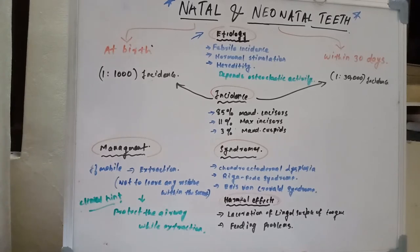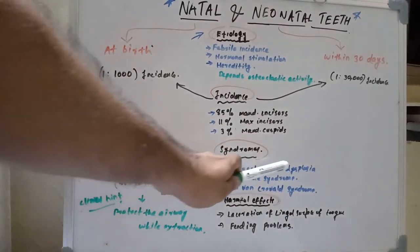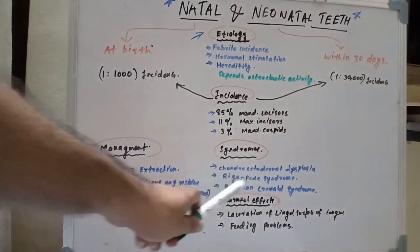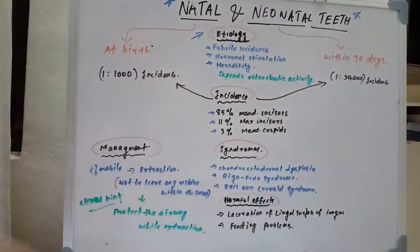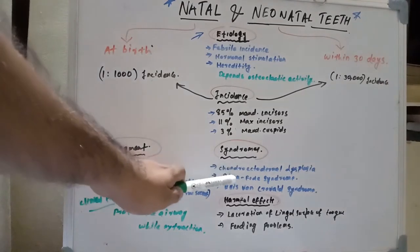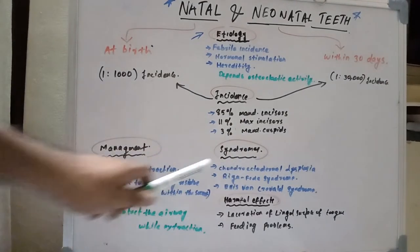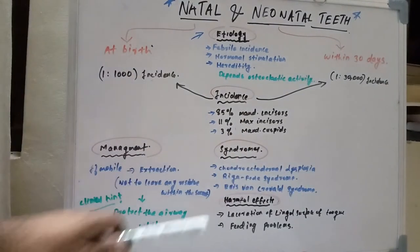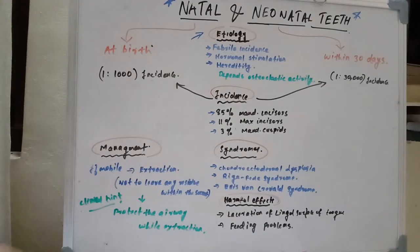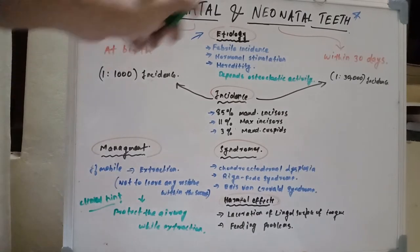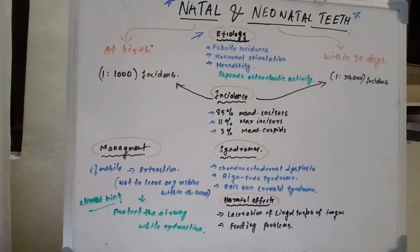Natal and neonatal teeth are mostly associated with certain syndromes. The important three are: Chondro-Ectodermal Dysplasia, Riga-Fede Syndrome, and Ellis-van Creveld Syndrome. Many other syndromes are also mentioned, but these three are the most important.